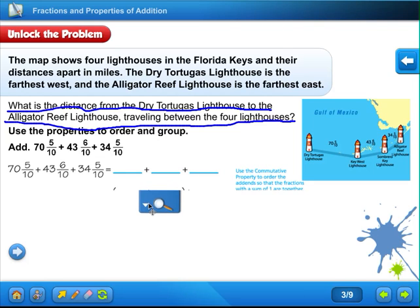The commutative property. So they wrote the problem out here and then they wrote a little side note here. It says, use the commutative property to order the addends so that the fractions with a sum of 1 are together. Do we see anything with the fractions that will be the sum? So let's look just at the fractions. We have 5 tenths, we have 6 tenths, and we have 5 tenths. Any two of those that we could put together that will give us a whole number? Yes, if you put 5 tenths and 5 tenths together will give you one whole.